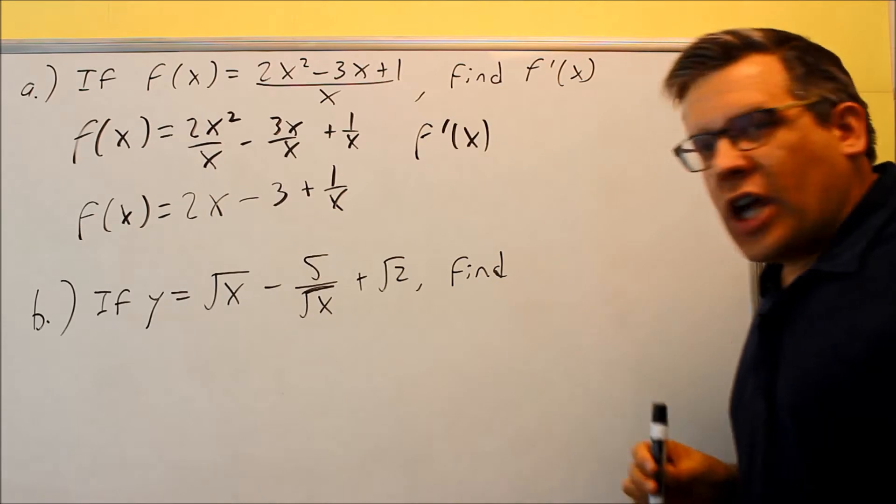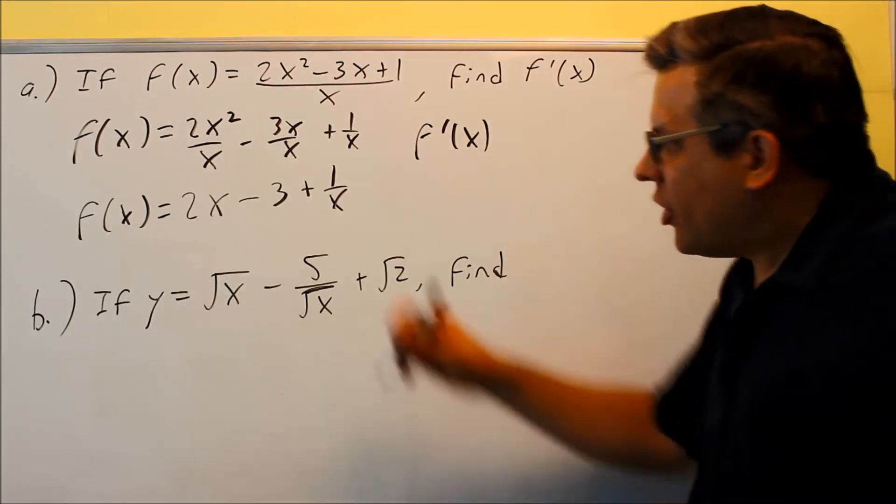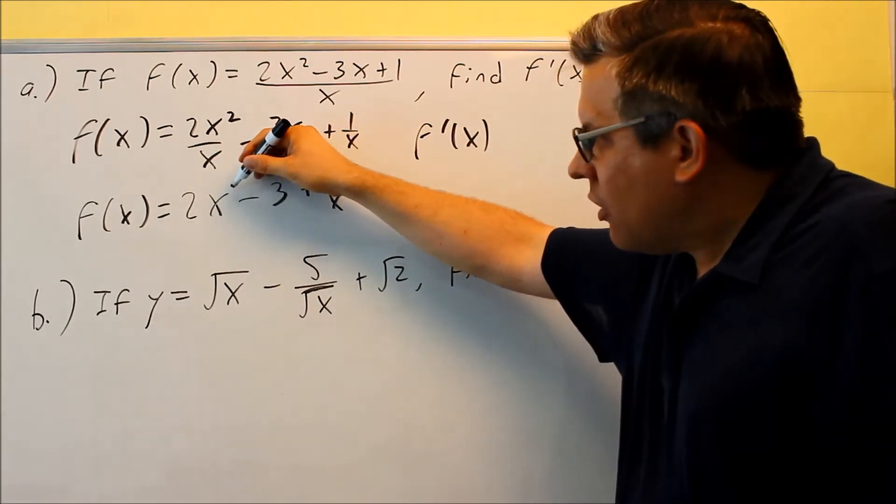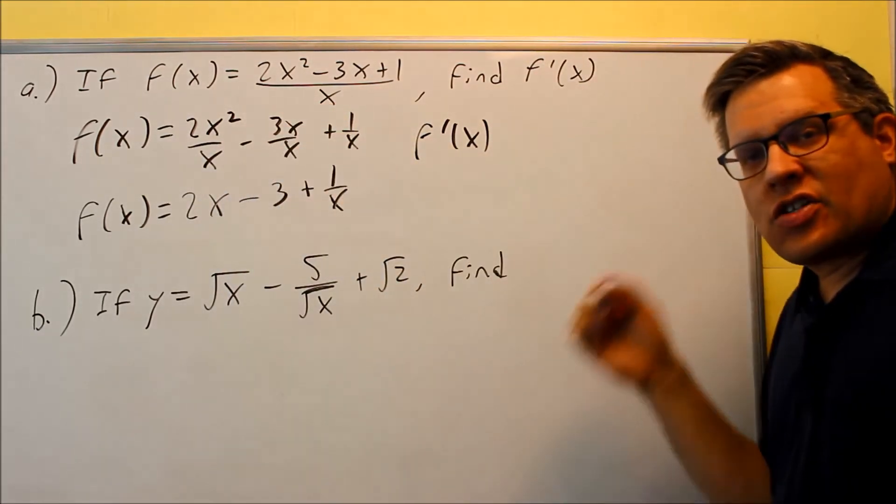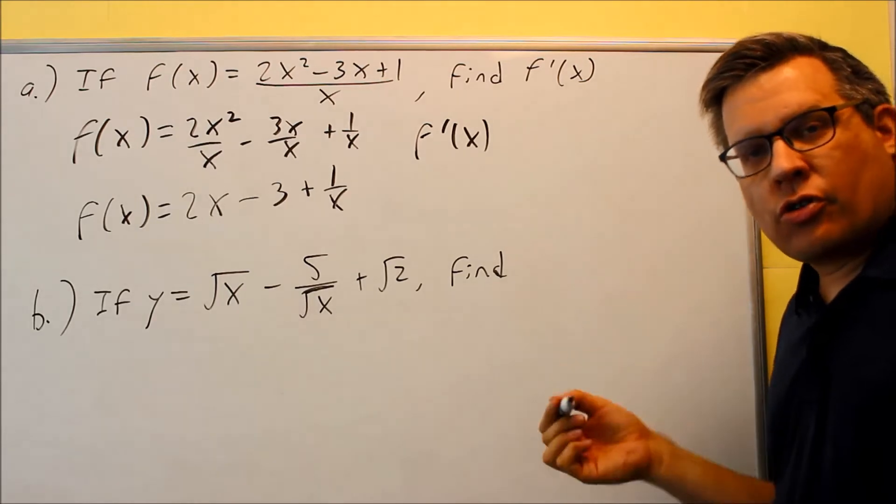Now this first one, we have 2x. I showed before in a previous video, this is 2x to the 1 power. The 1 comes down, subtract 1 from the exponent, and you get x to the 0, which is going to turn into a 1.